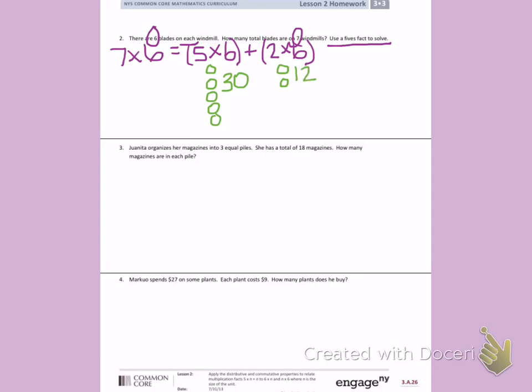So now I want to take the numbers thirty and twelve to add them together to give me my total for seven times six. Thirty plus twelve: zero plus two is two, three plus one is four. That tells me seven times six equals forty-two.